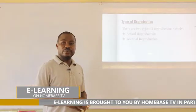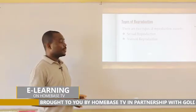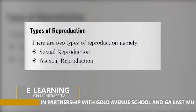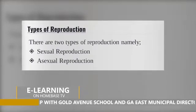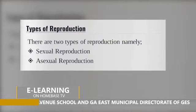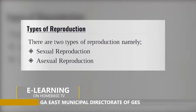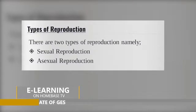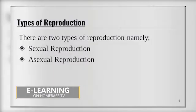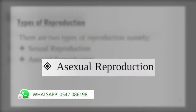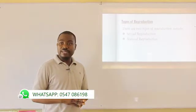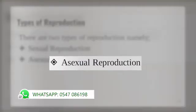There are two types of reproduction: sexual reproduction and asexual reproduction. Note the spelling of asexual reproduction — it is spelled with just one 'A' at the beginning; it is not made up of two A's, just one. Asexual reproduction.